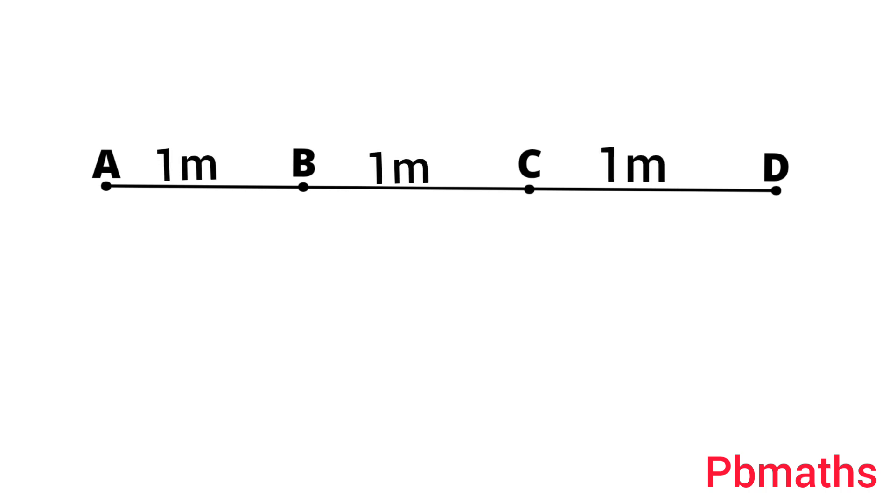An ant at point A wants to reach a sugar particle which is at point D, but there are insect repellents kept at points B and C. The ant would not go within 1 meter of any insect repellents. Then, what is the minimum distance in meters the ant must travel to reach the sugar particle?